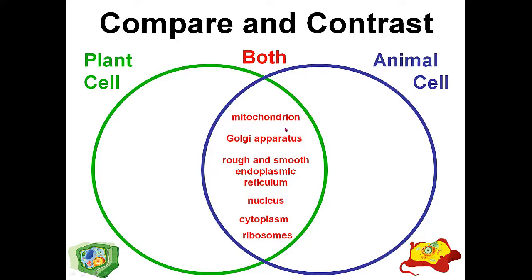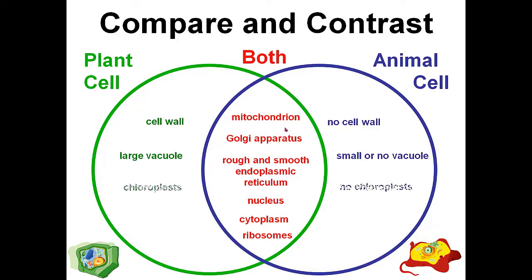We also saw the different cell organelles which are present in plant cells but not in animal cells — like cell wall, large vacuole, chloroplast, and flagella. These were the cell organelles present in plant cells but absent in animal cells.